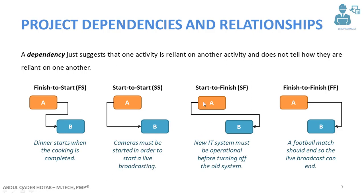Another type of relationship is Start-to-Finish, where the predecessor must be started in order to consider the successor completed. For example, new IT systems must be operational before turning off the old system. Once the installation of the new IT systems is completed and they are operational, that is when you can stop the old IT system.